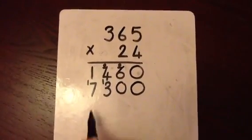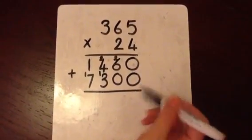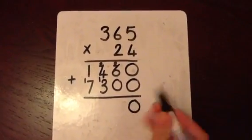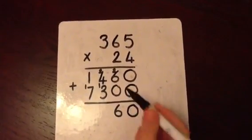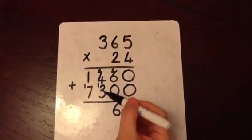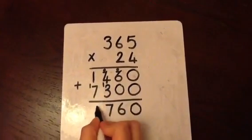Now we have completed the multiplication. We need to add these 2 digit numbers together. 0 and 0 is 0. 6 and 0 is 6. 4 and 3 is 7. 1 and 7 is 8.